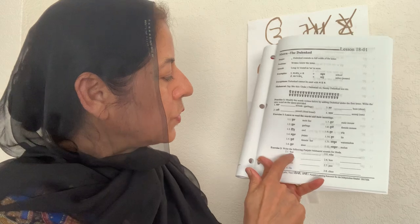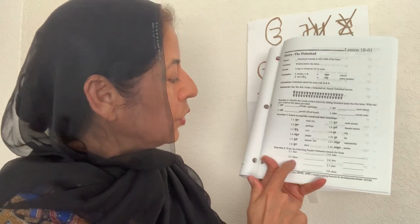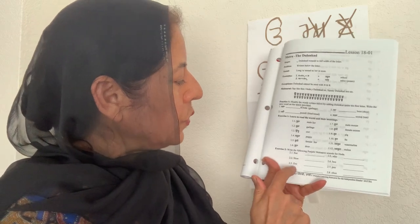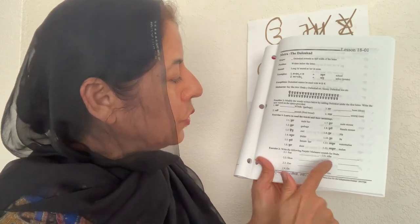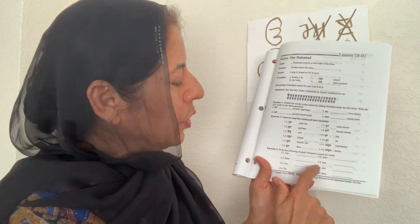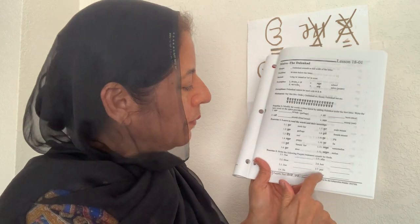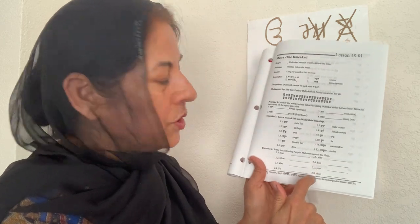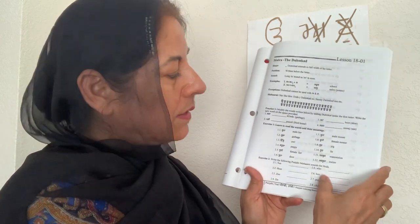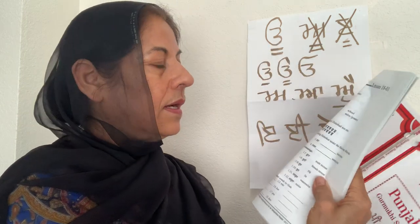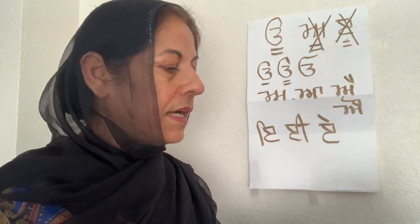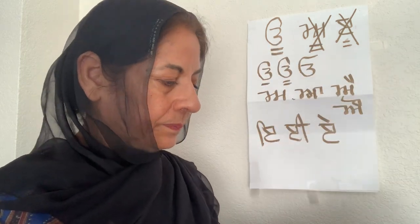Now write these Punjabi Moharni sounds with the Lankar: Su, Shu, Zu, Du, Hu, Bu, Phu, Chu. Pause the video and go ahead and write the Punjabi sounds for that with the Lankar.